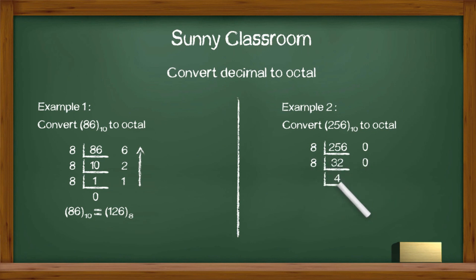And we repeat the process by dividing 4 by 8 again. And we get 0, and the remainder is 4. And once the result is 0, we stop. And last step, we write down the remainders from the last to first. Thus, we get octal number 400.